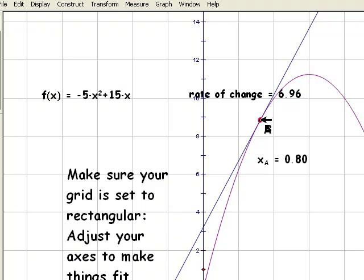So move them close together until it's almost a tangent, and it's looking like as I get closer and closer that rate of change is about 7.